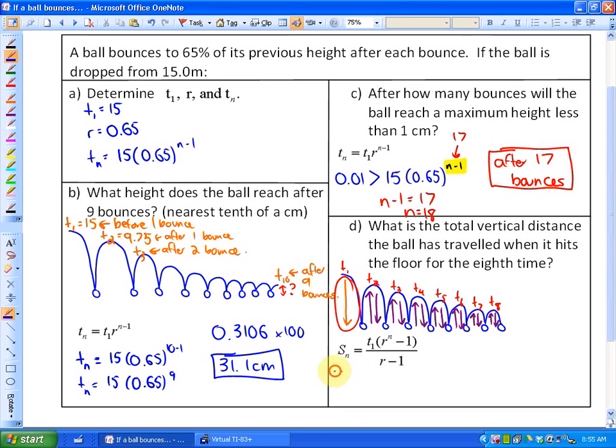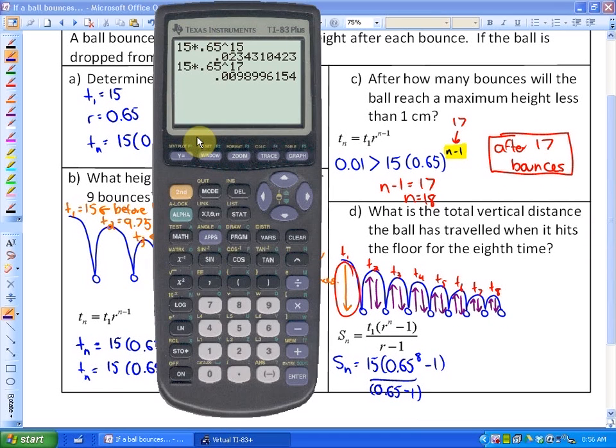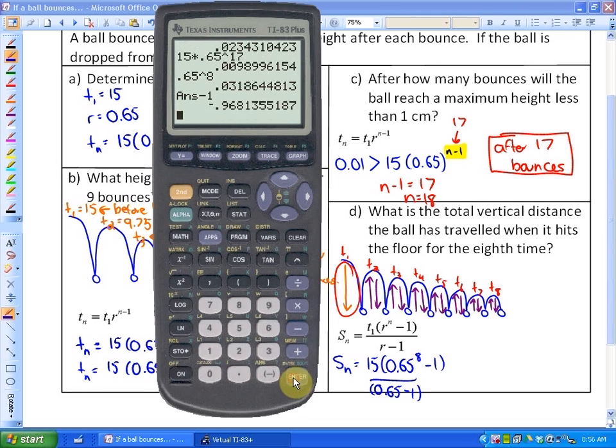So what I'm going to do is find out the sum of the first eight terms. So let's go ahead and do that. And that sum would be, let me go ahead and do it on my calculator, 0.65 to the power of eight. And then if I subtract one, times that by 15, and I'm going to divide that by negative 0.35.